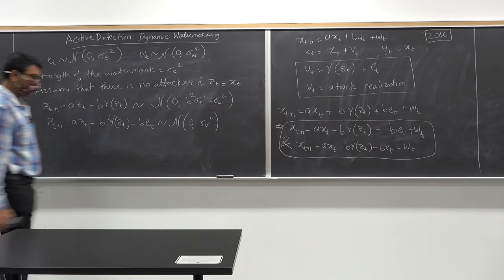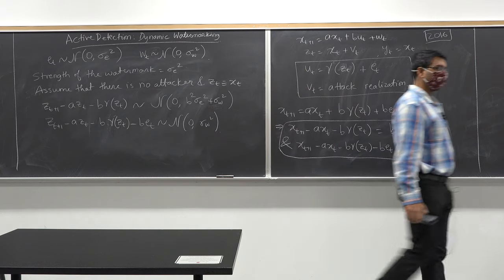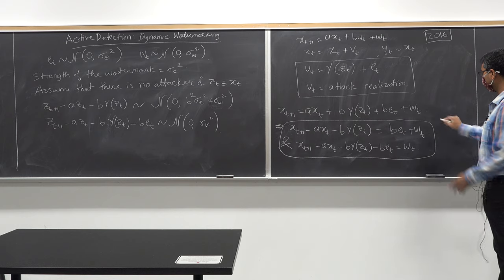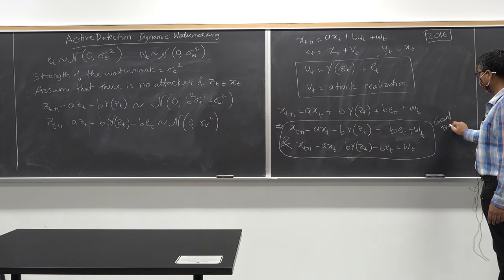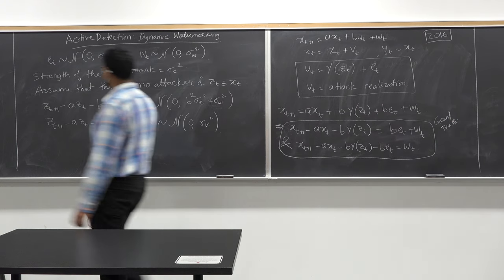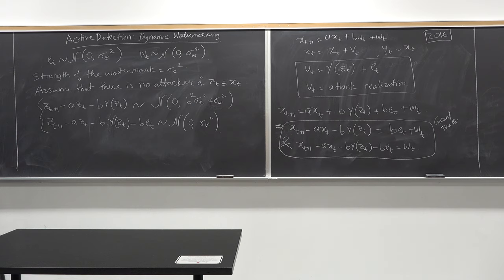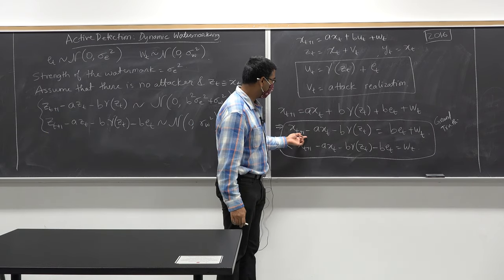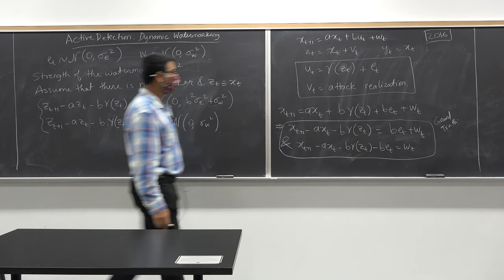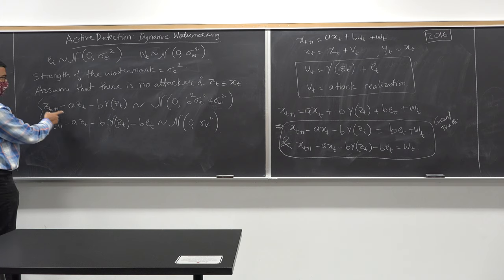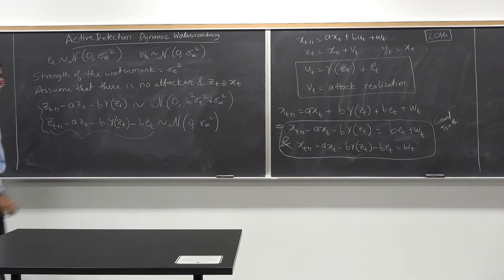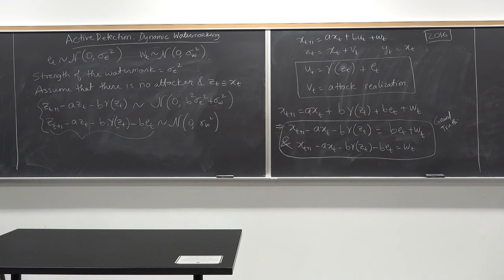Can we come up with a detection scheme by looking at this ground truth — the distribution under no attack? The defender knows the left side of the equation exactly, computing it from all the readings gathered. So the controller is expecting to see a sequence of random variables from this distribution, and it has to check: if the distribution information is violated by the sequence of information the controller is receiving, then the system is under attack.